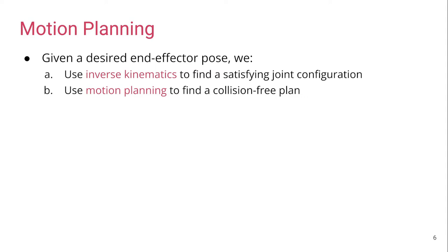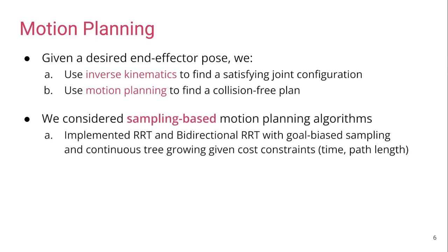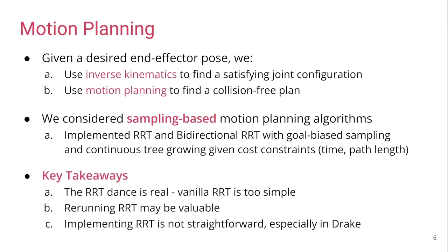In terms of motion planning, we first used inverse kinematics to find a satisfying joint configuration for our desired end-effector pose. We then used motion planning to find a collision-free path. We considered sampling-based motion planning algorithms, and implemented RRT and bidirectional RRT with goal bias sampling and continuous tree growing given some cost constraints. The key takeaway is that the RRT dance is real, and that we needed to make modifications to vanilla RRT. The implementation is also not very straightforward.